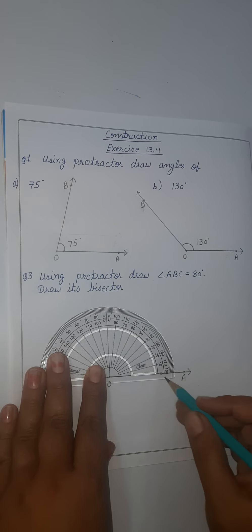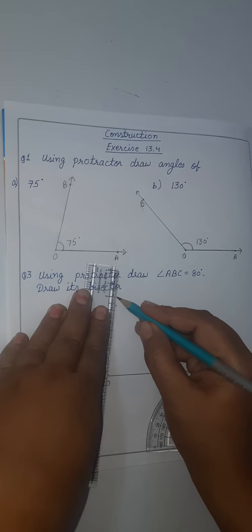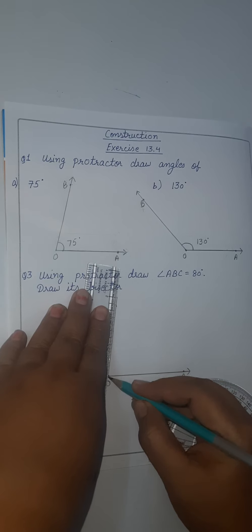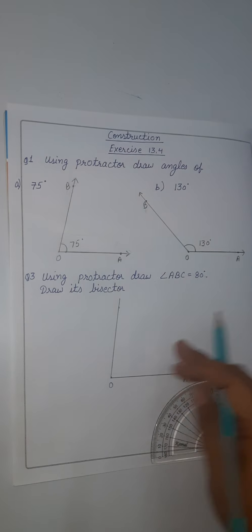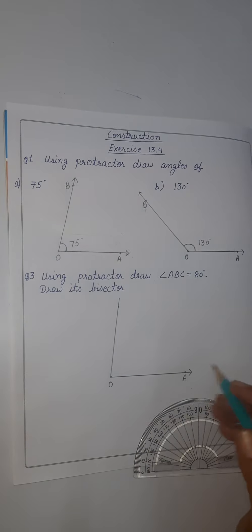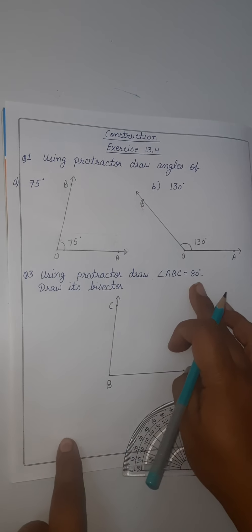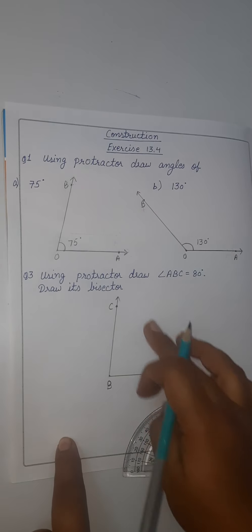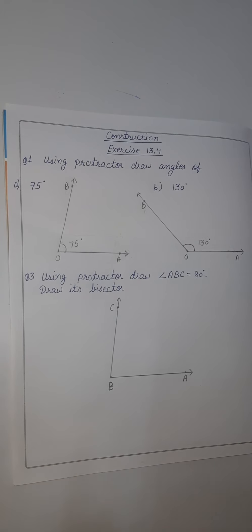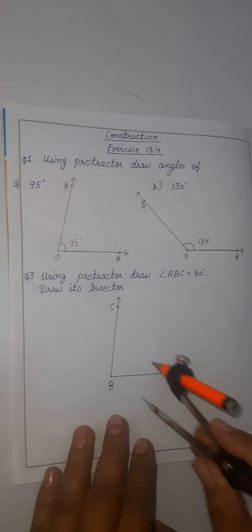Now we will join this. This is angle ABC — this is 80 degrees. So this 80 degree angle has been drawn. This is the first step: we have drawn an angle ABC of 80 degrees. Now we have to draw its bisector. Let's see how to draw the angle bisector.